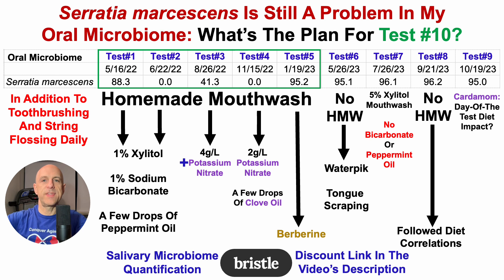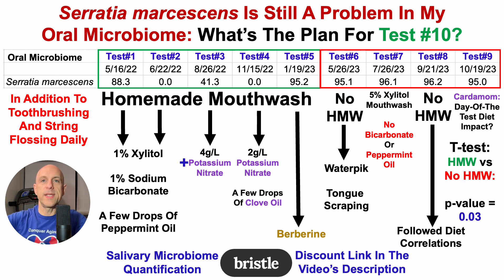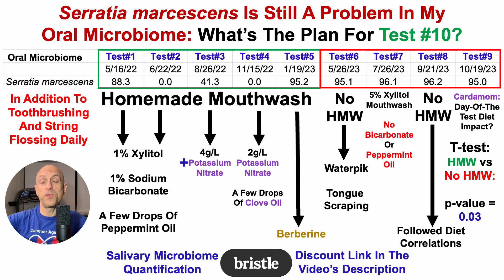Comparing the first five tests with an average of about 45% Serratia versus the last four tests with an average of about 95.5%, there may be something to having some formulation of that mouthwash in the everyday approach. Using a two-sample t-test, they are indeed significantly different — the first five tests being significantly lower than the last four. So for test number ten, I'm going to return to the original formulation of the homemade mouthwash: xylitol, sodium bicarbonate, and peppermint oil, and I'm considering adding a couple of grams of potassium nitrate to see what that may do to Serratia levels. Stay tuned for that in an upcoming video.